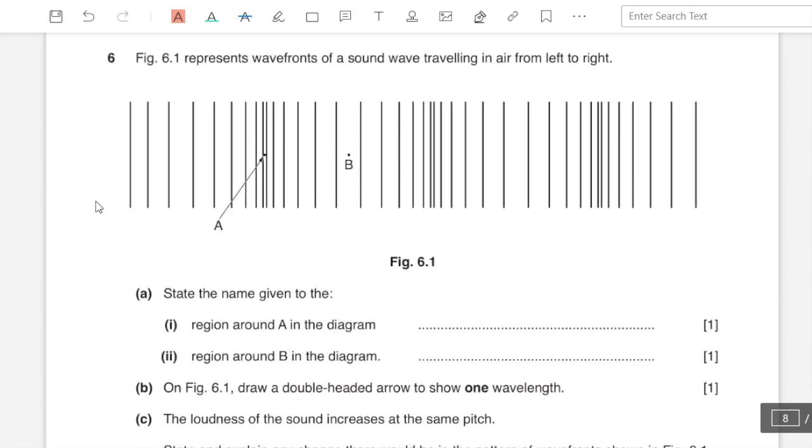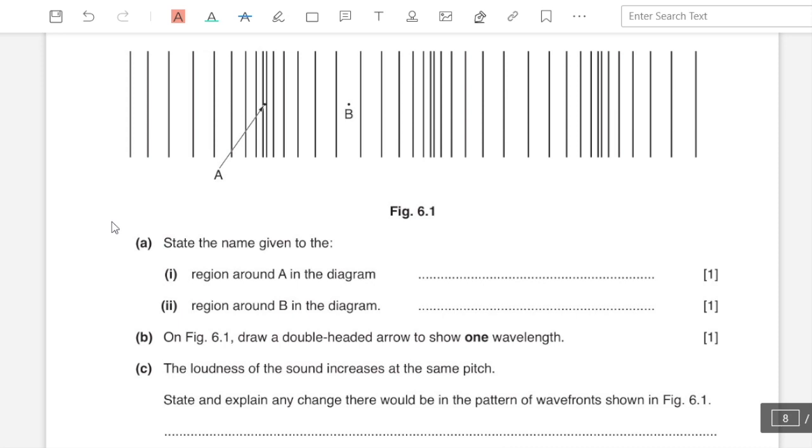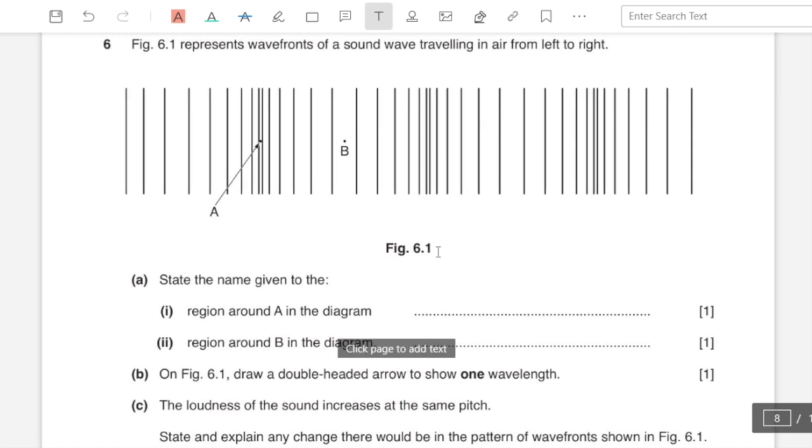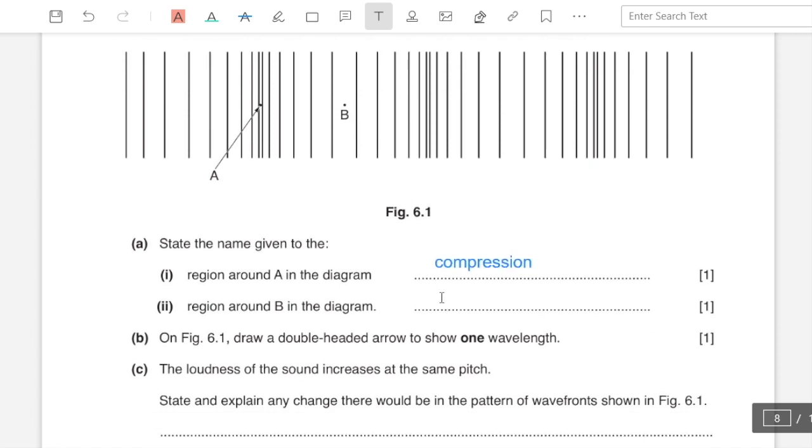Question number six: figure 6.1 represents wavefronts of a sound wave traveling in air from left to right. Part a: state the name given to region a in the diagram. Region a is compression since particles are closer together.